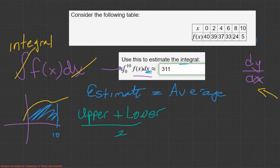So the upper estimate would be these values. Why? Because they're the bigger values. And then the lower would be these values. Why? Because they're the smaller values.